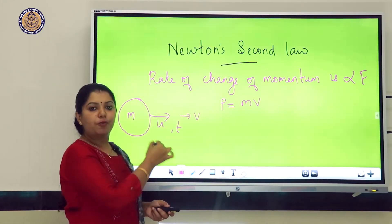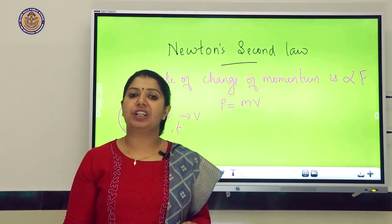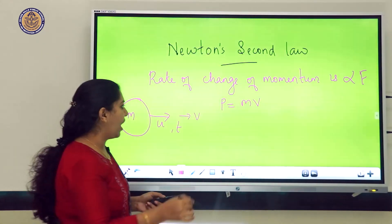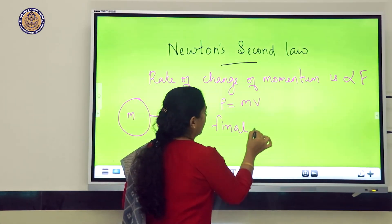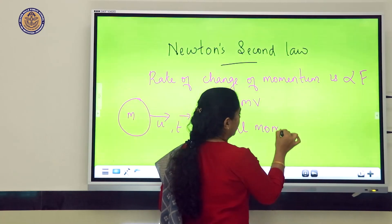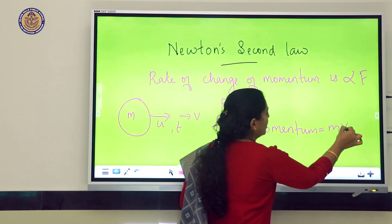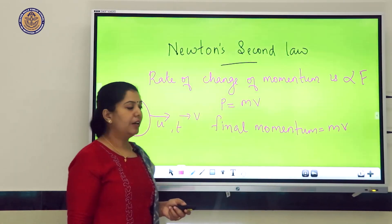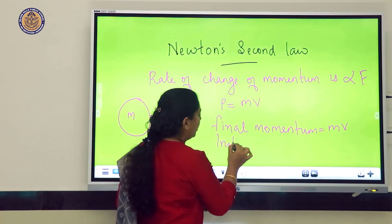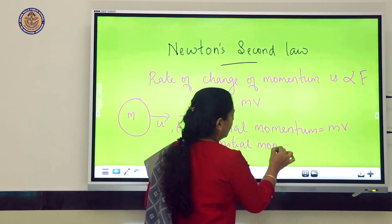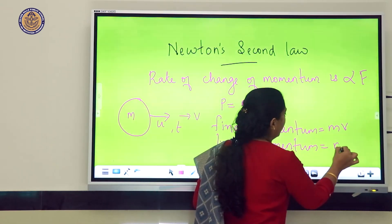For this object of mass M, initial velocity is U and final velocity is V. Final momentum equals mass into final velocity (MV). Similarly, initial momentum equals mass into initial velocity (MU).